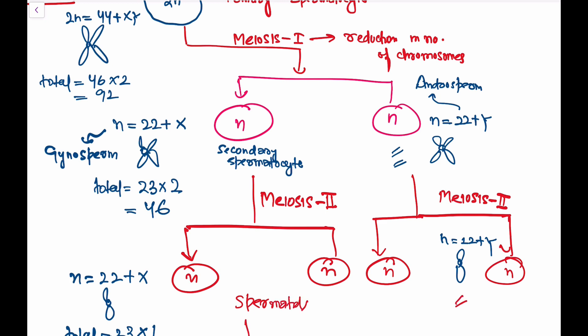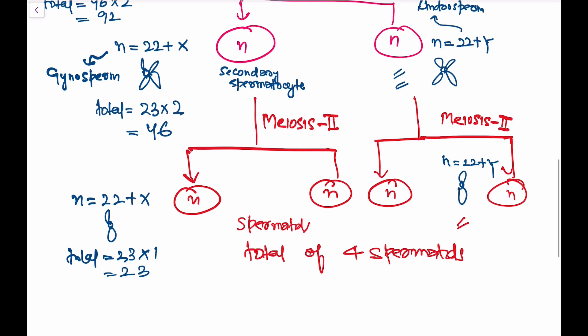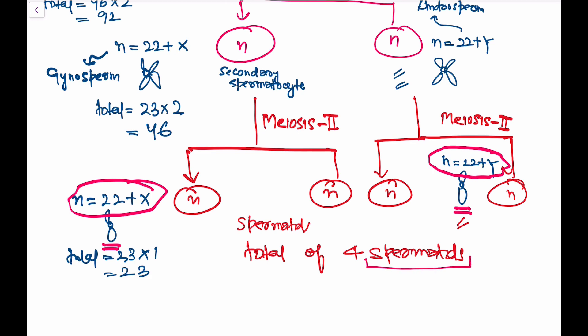These four new haploid cells formed after Meiosis II are called spermatids. Of these, 50% have genotype 22 + X and 50% have 22 + Y. Since chromatids were reduced in Meiosis II, each chromosome now has a single chromatid, so total chromatids per cell = 23 × 1 = 23.